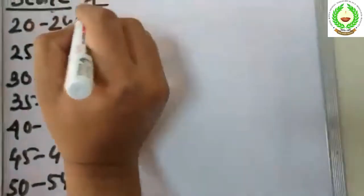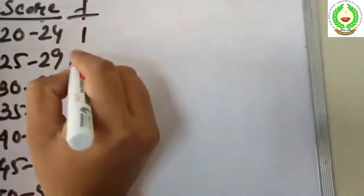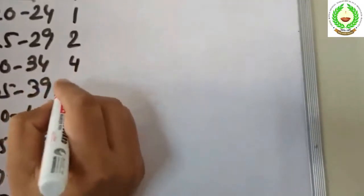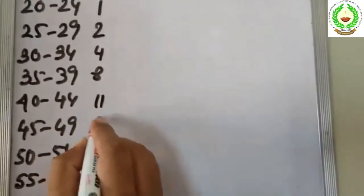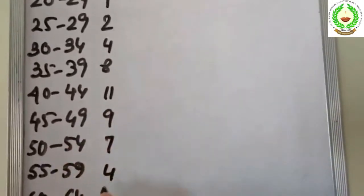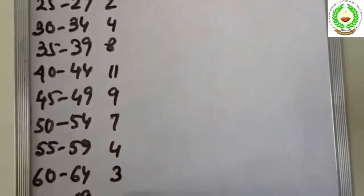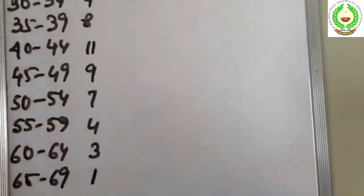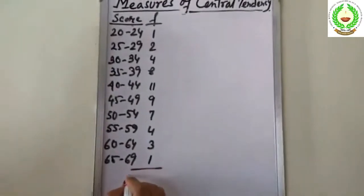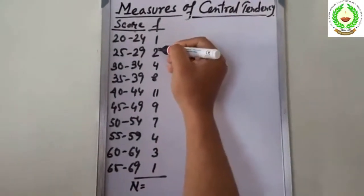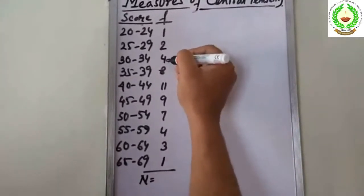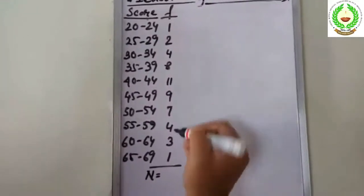The frequencies are: 1, 2, 4, 8, 11, 9, 7, 4, 5, and so on. The total frequency n is equal to 50.